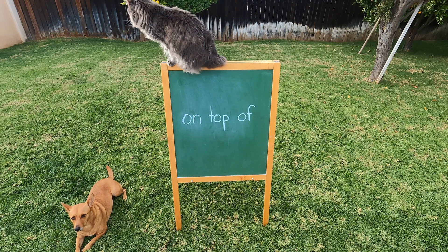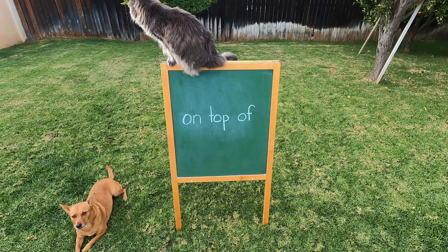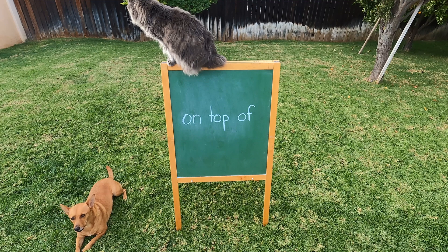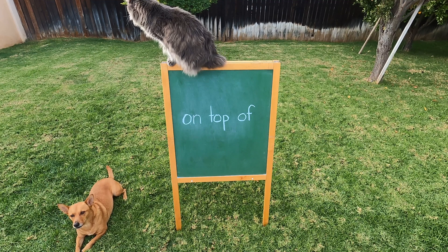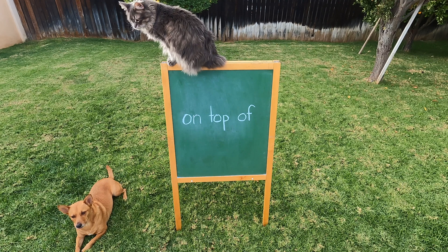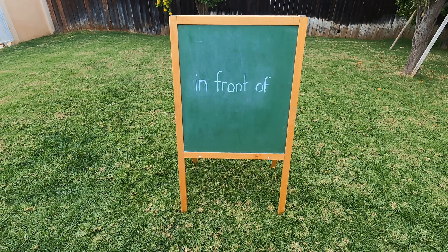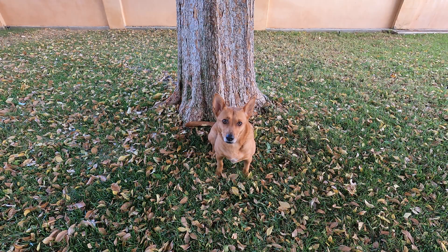On top of — Axel is on top of the easel. Yeah, like Ginger said. Get down Axel! In front of — Ginger is in front of the tree.